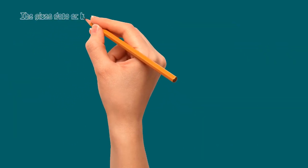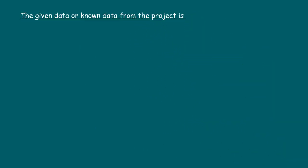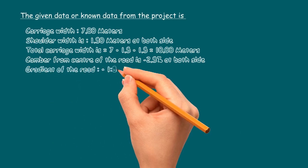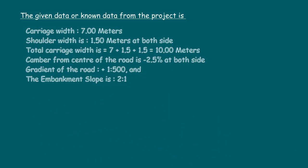Now we will see in detail how the earthwork quantity is calculated. The given data from the project is: carriage width 7 meters; shoulder width 1.5 meters at both sides; total carriage width equals 7 plus 1.5 plus 1.5, which equals 10 meters. Camber from the center of the road is minus 2.5% at both sides. Gradient of the road is plus 1 in 500. The embankment side slope is 2 is to 1.